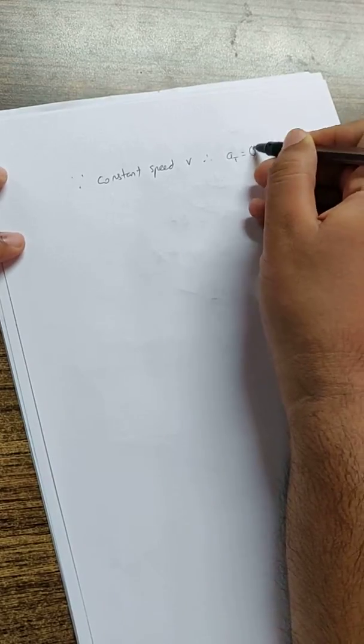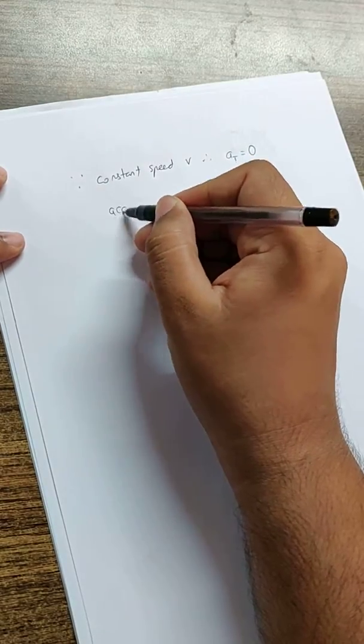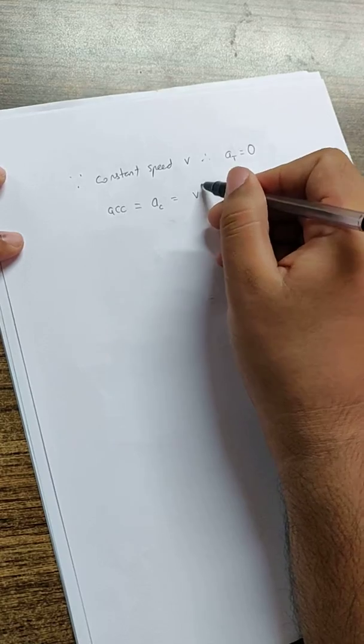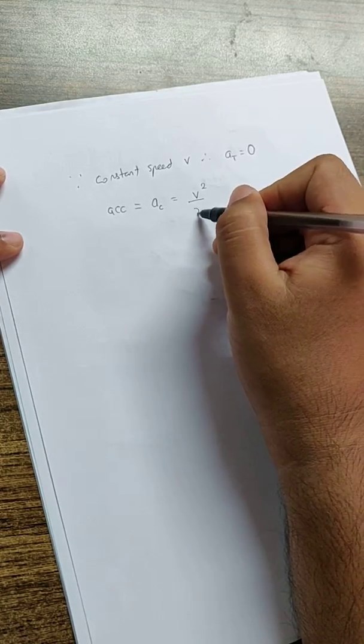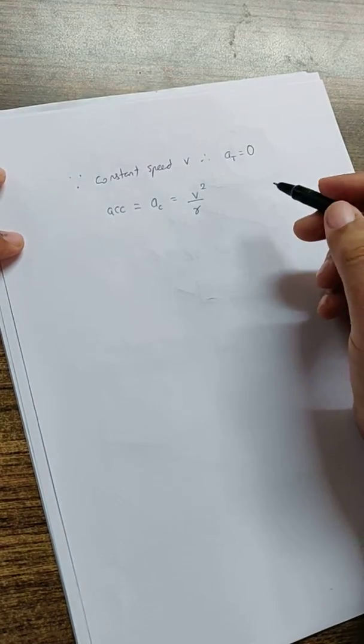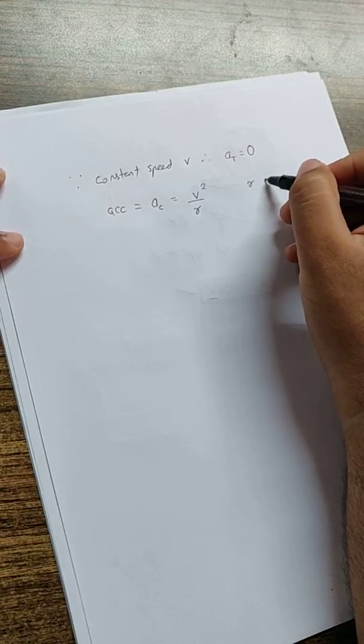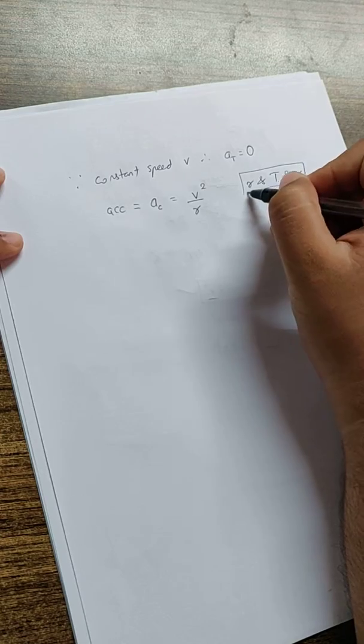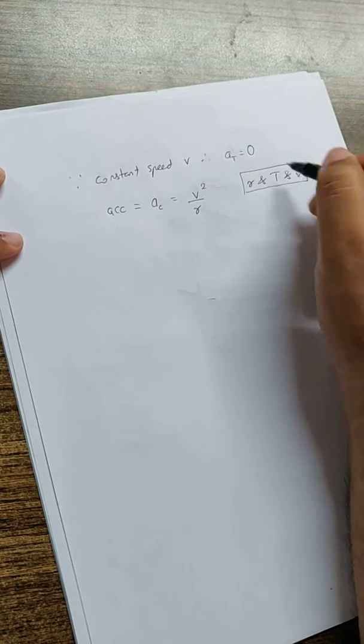the centripetal acceleration, which we can use as V squared by R. But here they want the answer in terms of R, T, and V - these three terms only. So if we want to use these three terms, we need to include T, which is the time period.